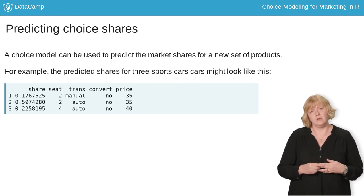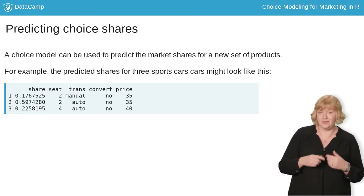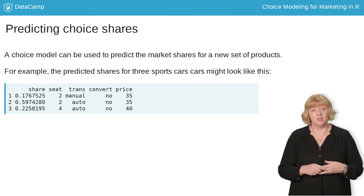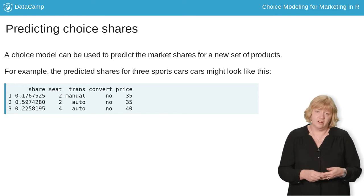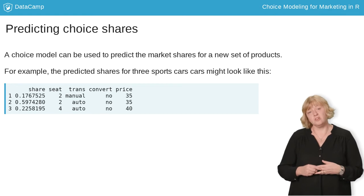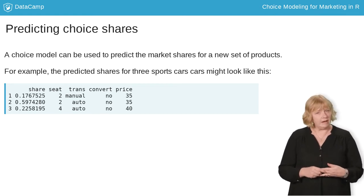Suppose you were considering developing the two-seater manual transmission car in the first row — that's the car I would choose. However, you can see that the predicted share for that car is only 17.7 percent. If you're planning to make a car like that, this is not great news. And based on what we saw before in the coefficients, you might want to think about lowering your price or switching to an automatic transmission.